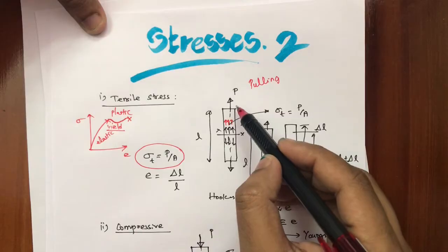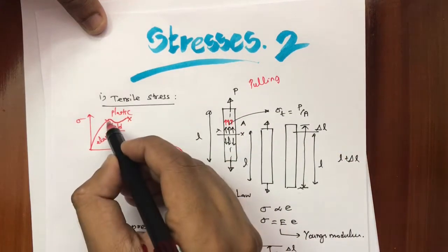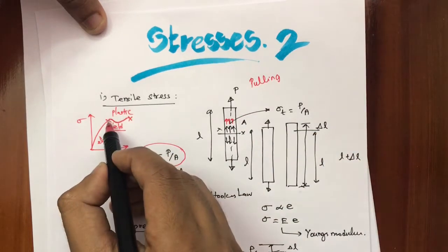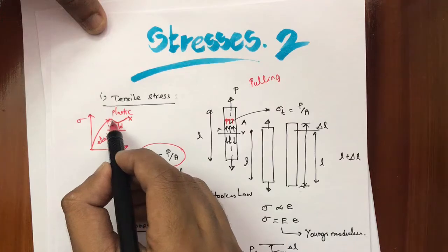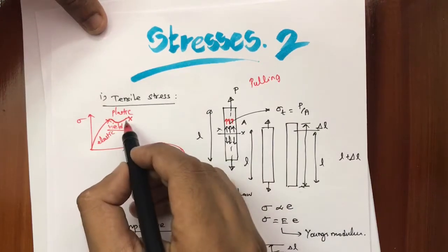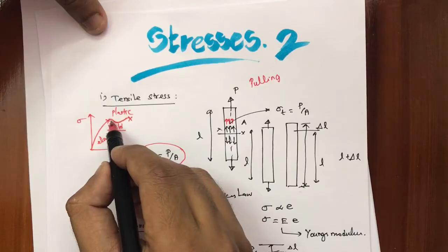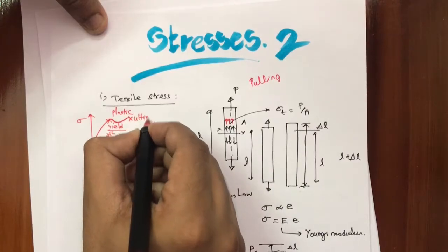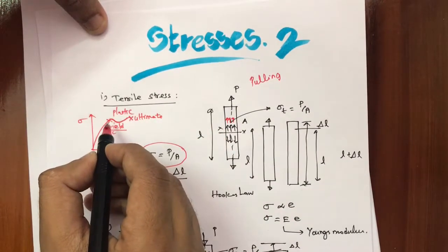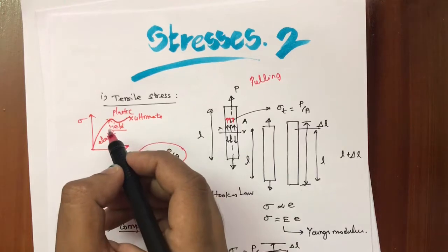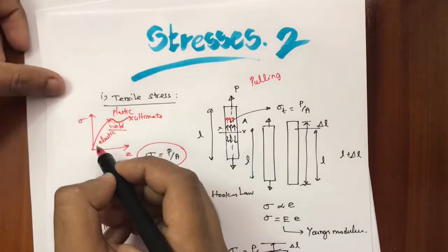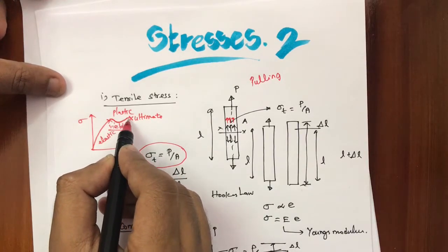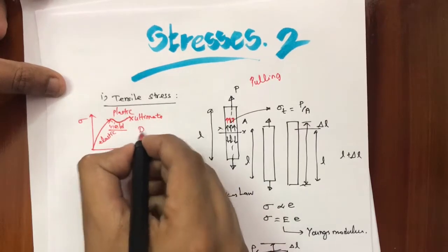When we apply the load and increase it till the yield point, the material is in the elastic region and will return to its original position. When it reaches the yield point, it goes into the plastic region and will never come back to its original position — plastic means permanent deformation. If we continue to increase the load, it will fail at the ultimate point. That behavior describes a ductile material.